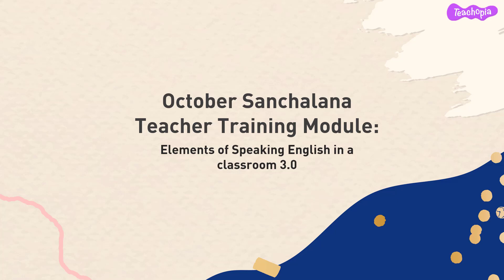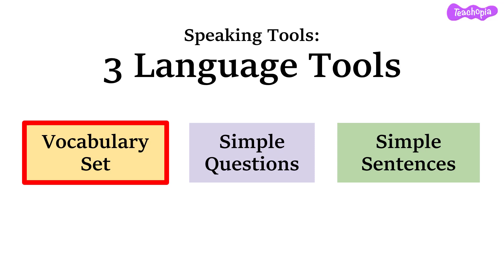Welcome to our October Sanchalana teacher training module. The topic chosen for this month's module is on the elements of speaking English in a classroom 3.0. Before we begin, let's have a quick recap on what we learnt and discussed in our previous modules. We saw how language tools have three major categories. The three major language speaking tools are vocabulary set, simple questions and simple sentences.